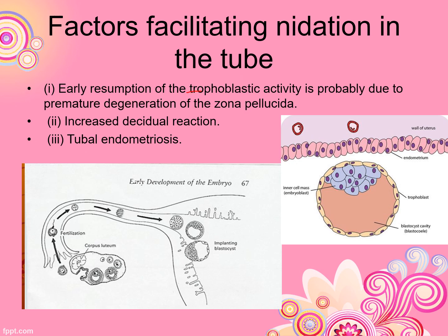This shows a trophoblast layer of the embryo. The trophoblast is the outer layer in embryology. Increased decidual reaction is seen — the endometrial layer of the uterus changes during pregnancy. In tubal endometriosis, the endometrial layer is also affected within the tube.